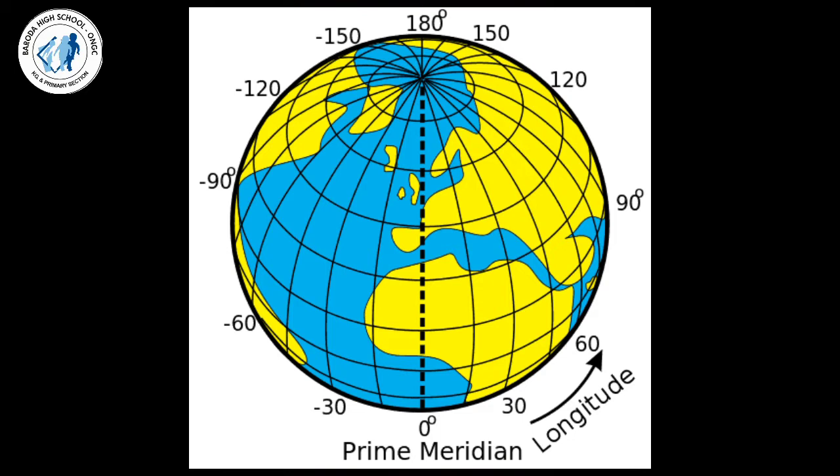You have seen the graph book which you used to use when you were a smaller child — that is similar to a grid system. So latitudes and longitudes together on the earth form a grid, and in this way we can easily locate places.